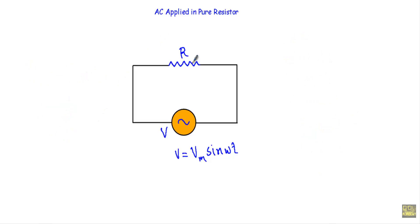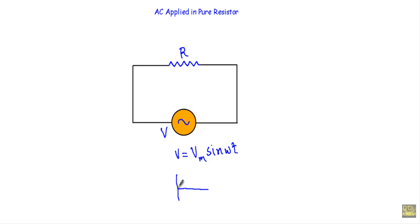Consider a simple circuit consisting of a pure resistance R ohms connected in series with an alternating voltage V. The voltage V is equal to Vm sin omega t. As I am applying a sinusoidal alternating voltage, it will have a wave shape like this — this will be our alternating voltage V.